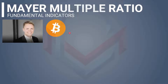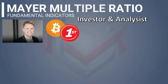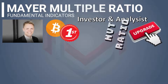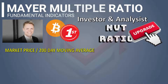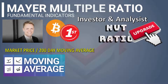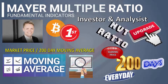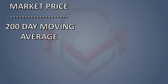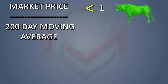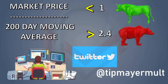If you look at the Mayer Multiple, you can analyze Bitcoin from the perspective of early investors and analysts — that's why they created this ratio. Basically, the market price is divided by the 200-day moving average. The 200-day moving average is the last 200 days' closing price average. If the ratio is less than 1, it is a bullish signal. If it is greater than 2.4, it is bearish. You can track this ratio daily using the Tip-Mayer Multiple tool.